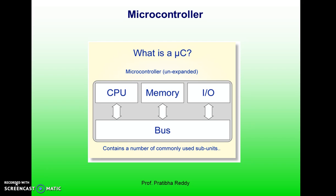What is a microcontroller? A microcontroller has a CPU in addition to a fixed amount of RAM, ROM, input-output ports and a timer all on a single chip. In other words, the processor, RAM, ROM, I/O ports and timer are all embedded together on one chip. Therefore, the designer cannot add any external memory, input-output or timer to it. The fixed amount of on-chip ROM, RAM and a number of input-output ports in a microcontroller makes them ideal for many applications in which cost and space are critical.